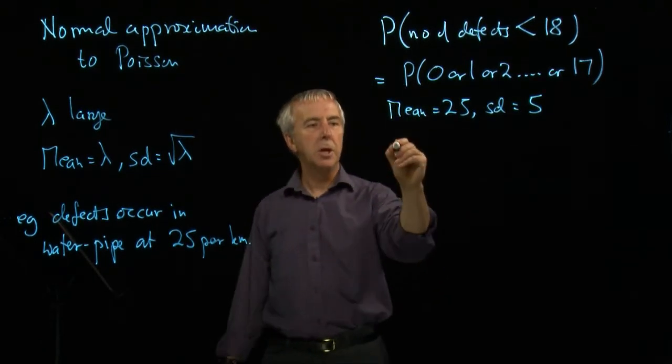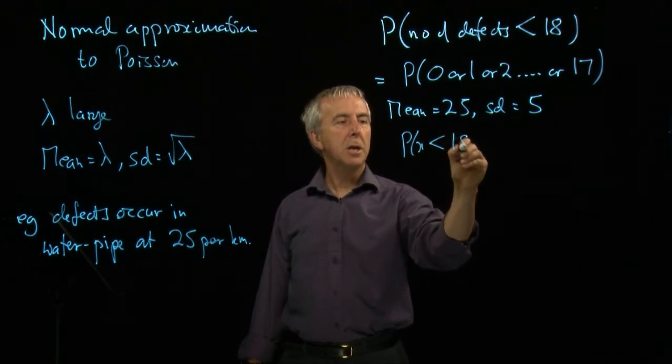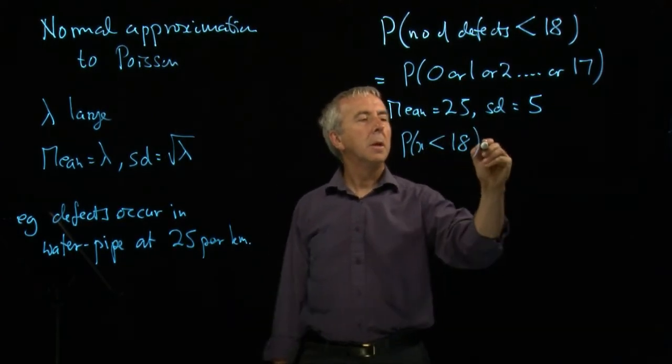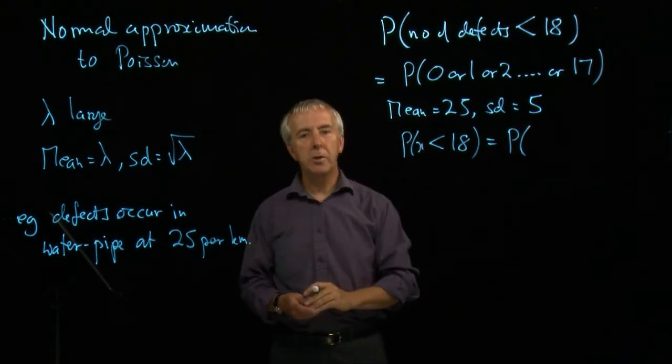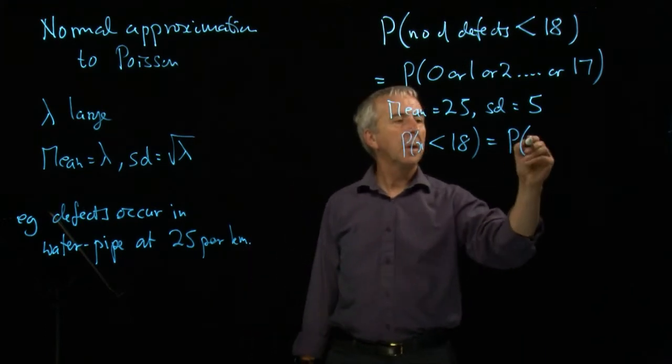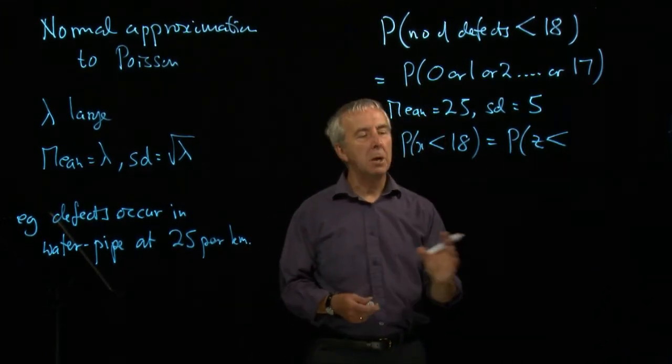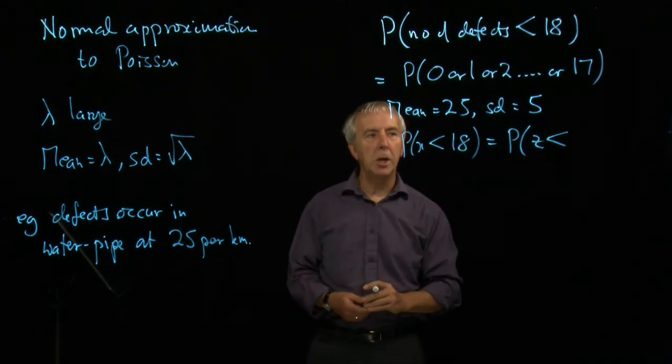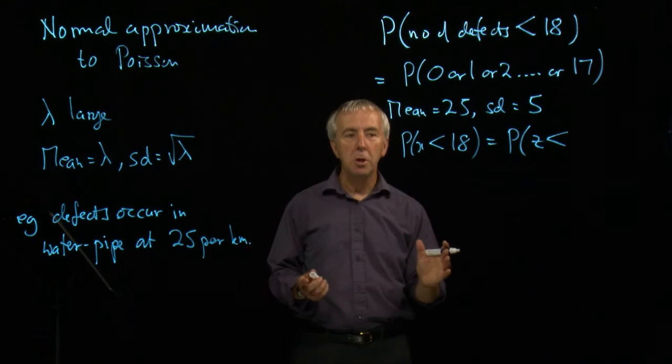And so the probability that x is less than 18, we convert to the standard normal distribution. So we convert to z and we take away the mean and divide by the standard deviation. But as before, we need to be aware of the continuity correction.